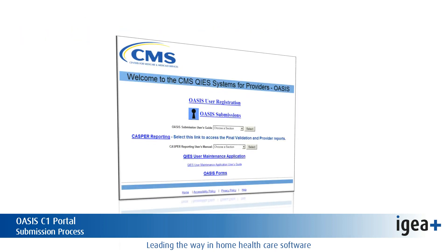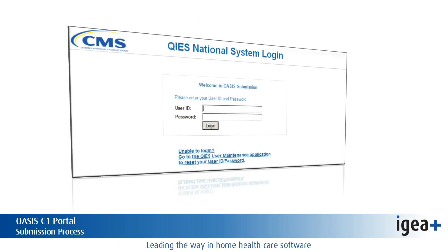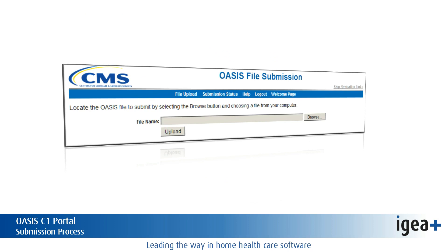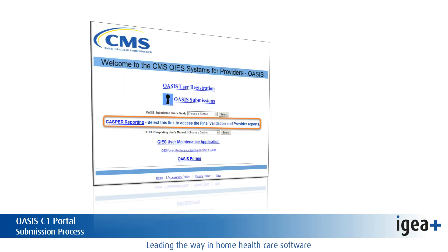If you are a new user, you will need to utilize the Online User Registration Tool to obtain a KEY Submission Login ID. There, you will click on the OASIS submission. After that, you will be prompted to enter your National KEY username and password. The OASIS File Submission System File Upload page will come up. After that, click on Browse and browse for a zip file containing the OASIS file on your computer. After submitting the file, you can access the CASPER Reporting link to check the Final Validation Report.